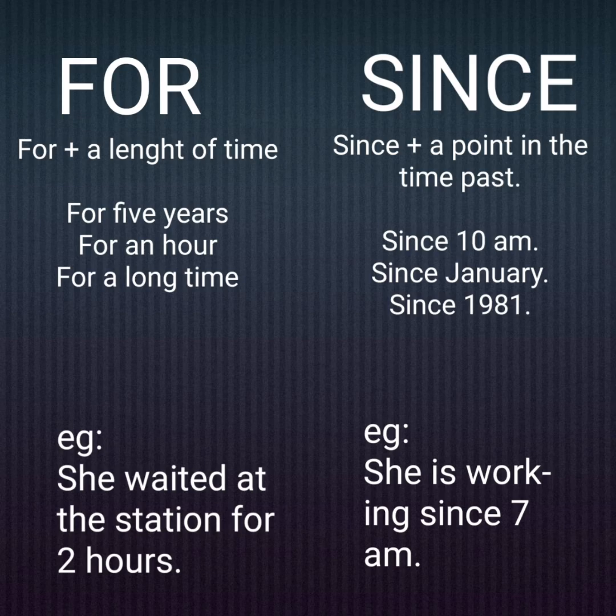'Since January', 'since 1981'. Some examples in sentences: 'She waited at the station for two hours' — here I'm giving a length of time. But for 'since': 'She is working since 7 a.m.' — here I am mentioning a point in time.